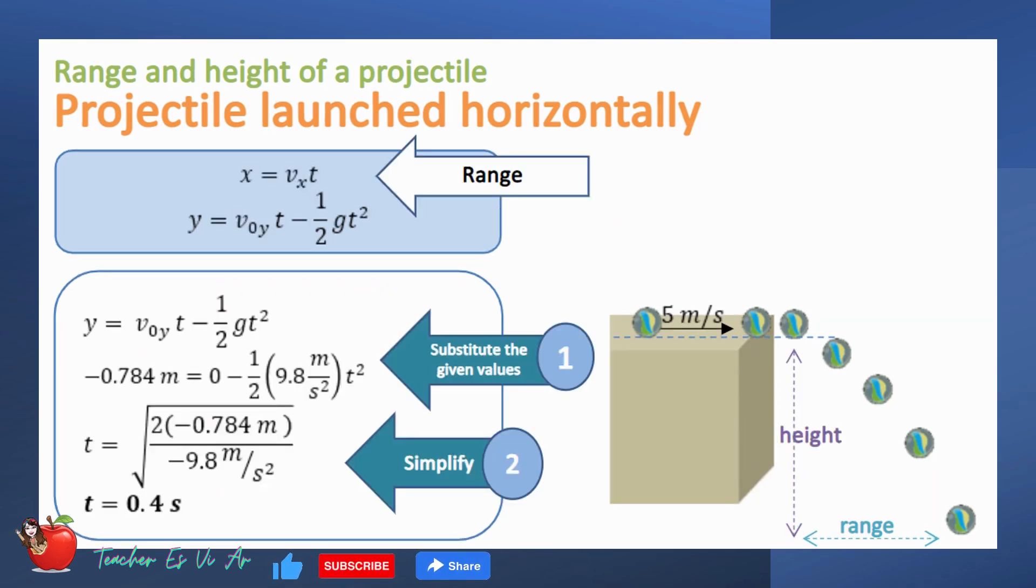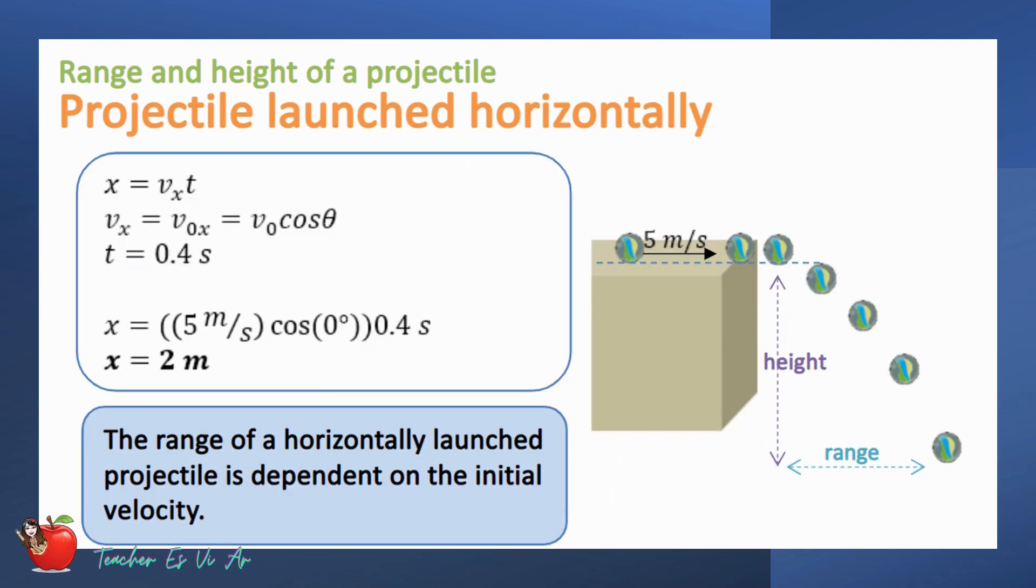The range of the projectile can be computed by multiplying the velocity of the marble at the time the projectile reached the ground. We can use the height to determine the time it will take the marble to reach the ground. Now we already know the time when the ball will reach the ground, we can compute the range. The horizontal velocity at this time is similar to the initial horizontal velocity. Multiplying the horizontal velocity with the time will give the range.